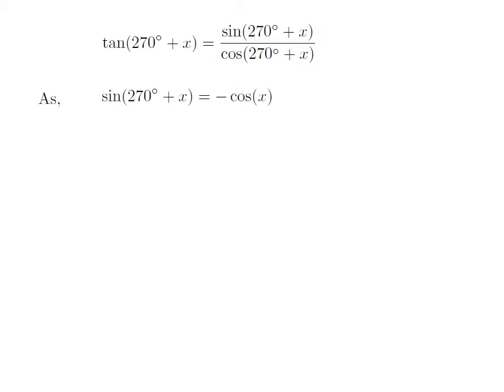As we know, the trigonometry identity sine of 270 degrees plus x equals minus cosine of x. The proof of this trigonometry identity has been explained in the video appearing in the upper right corner. The URL of the video has been mentioned in the description section as well.